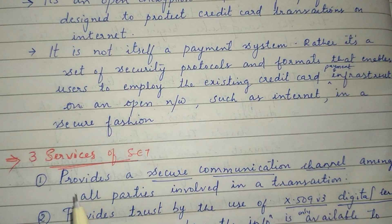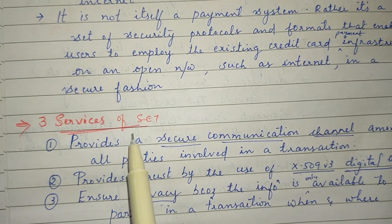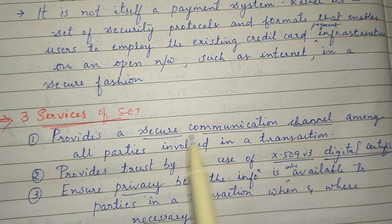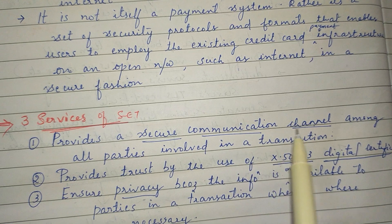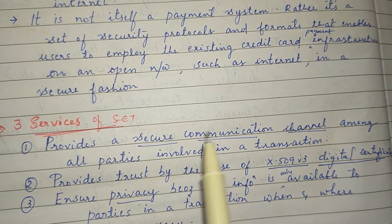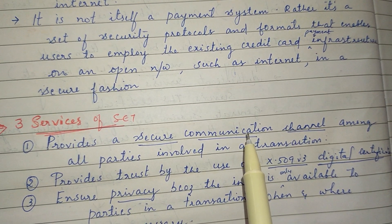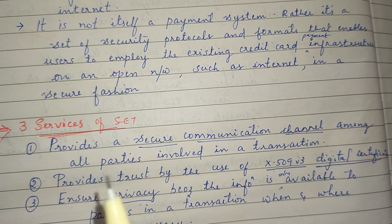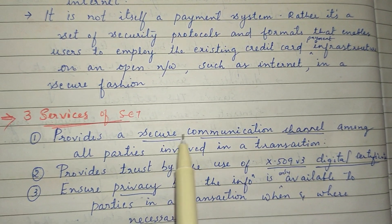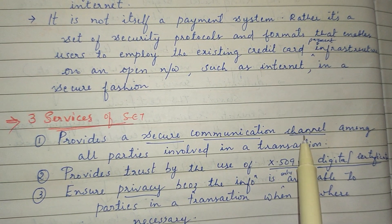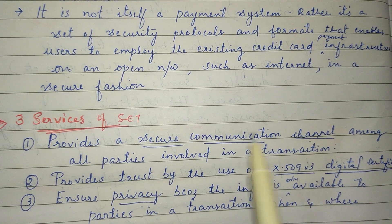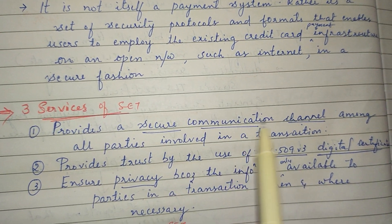In SET, there are three services. The first service is to provide a secure communication channel. The credit card transactions are running between parties. The secure communication channel is provided, and because of that channel, they are doing all transactions.